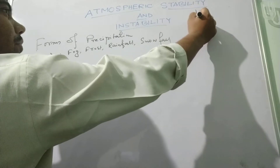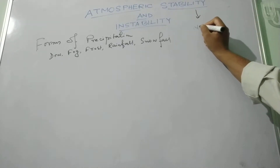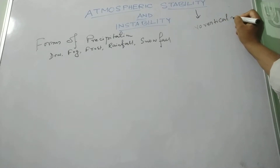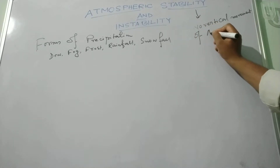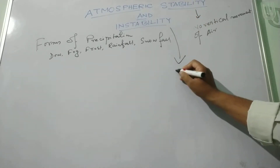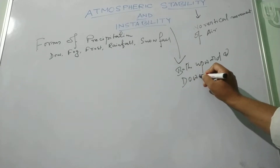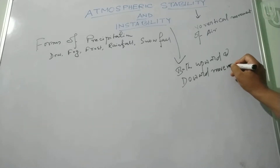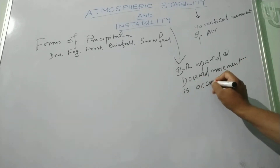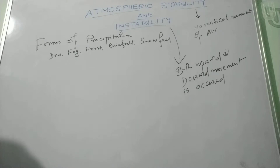Generally, stability is caused when there is no vertical movement of air — that means the stable condition is found. In case of instability, there is both upward and downward movement. So in stable conditions there is no vertical movement of air, whereas in unstable conditions both downward and upward types of movement are found.